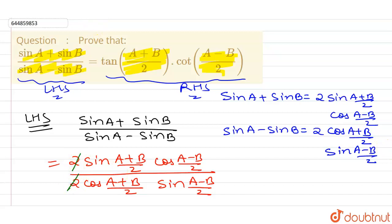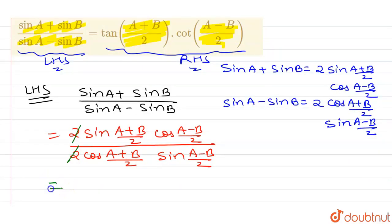I can write it as equals to sine by cos is tan, so I can write here tan and angles are same, that is A plus B by 2, and here it is cos by sine, so I can write here cot and angle is same, that is A minus B by 2.